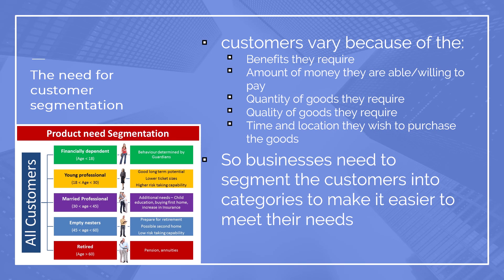Customers vary based on other things as well. The categories they fall under include the benefits that they require. Someone might need a car, but different people need different types of cars with different benefits. For example, a family of four — the benefit they need is a lot more space and ease of boot access and things like that.